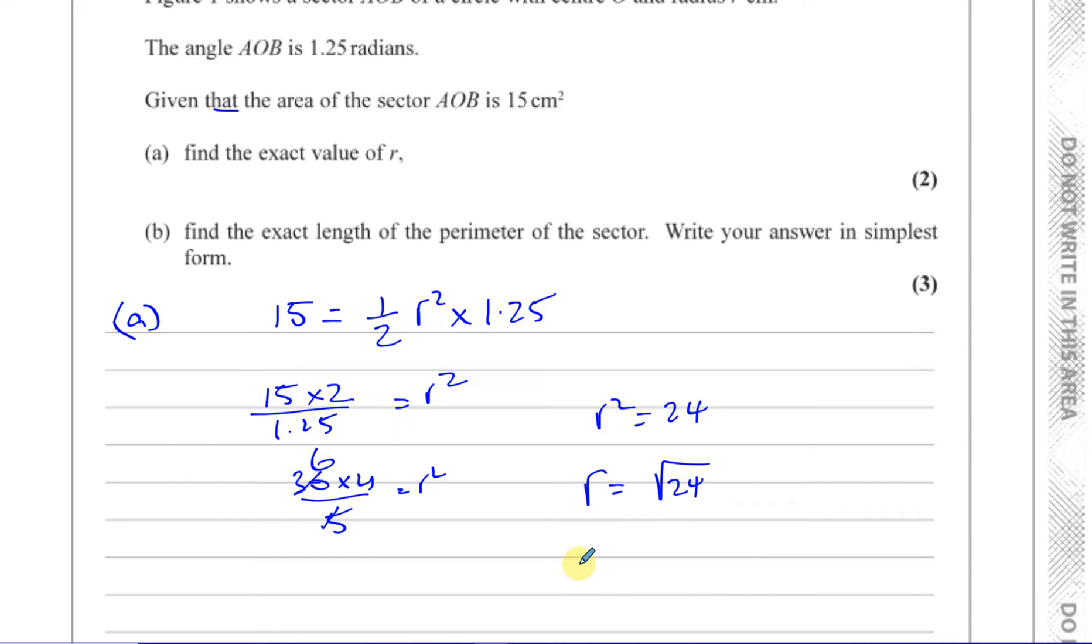Now you could leave your answer like this in this question because it doesn't say write your answer in the simplest form. But it's always best to write in your simplest form, meaning if it's in surd form, you take out any perfect square factors. Now in 24, you see there's 4 times 6. 4 is a perfect square. So if you write this as R equals the square root of 4 times 6, which gives you 2 times root 6. So that is the radius of this sector, 2 root 6. They want you to express it in this form. They don't want you to express it rounded to any decimal places or rounded to the whole number. They want it in exact form. This is exact form, not rounded.